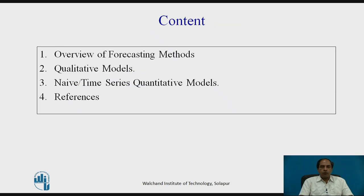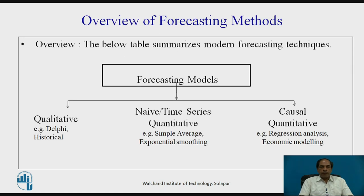There are various methods of forecasting, and we will have a close look at the overview. There are qualitative and quantitative models. Qualitative techniques include the Delphi technique and historical methods. Quantitative time series methods include simple average, exponential smoothing, and moving average. Causal quantitative techniques include regression analysis and economic models. Today we will discuss qualitative and time series quantitative methods.